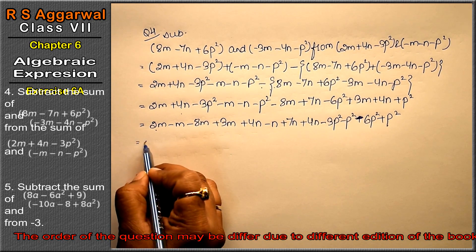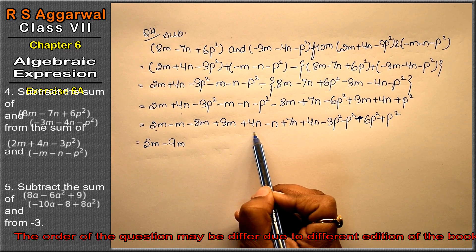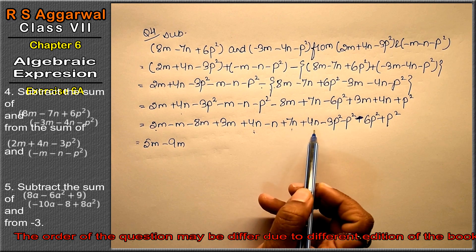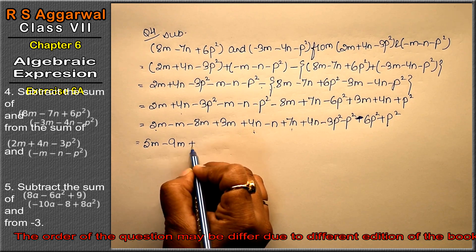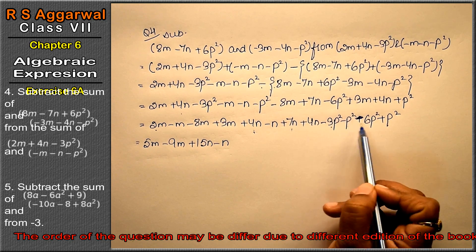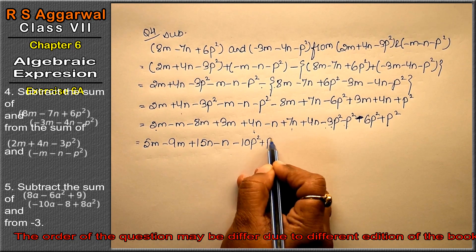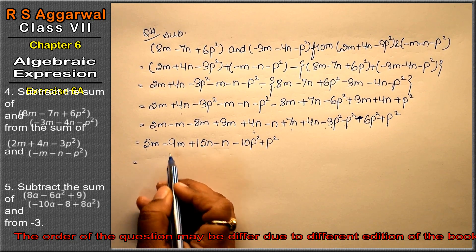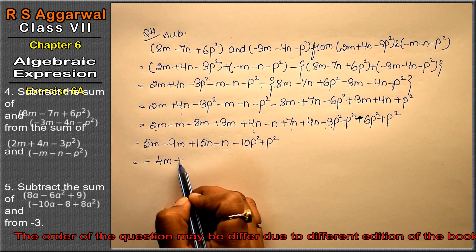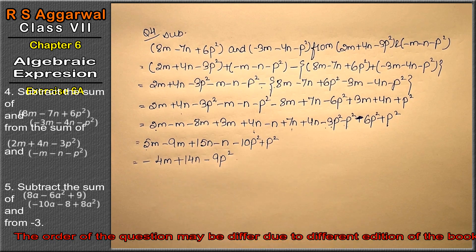Taking plus terms: 2 plus 3 gives 5m minus 9m. For n: 4 plus 7 is 11, plus 4 is 15n, minus n and minus — so 15n minus some. For p²: minus 10p² plus p². These have opposite signs so they subtract, taking the sign of the larger value. The answer is 4m plus 14n minus 9p².